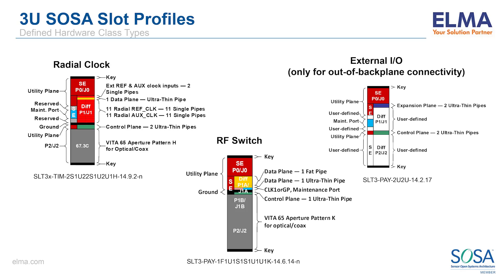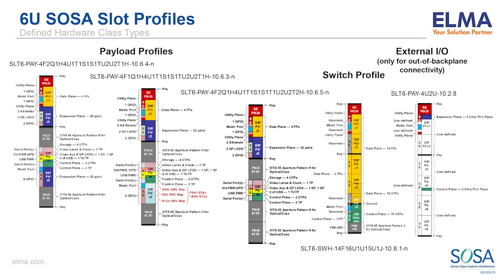SOSA restricts how these pins can be used, explicitly prohibiting them from being routed to other slots in the SOSA backplane, to prevent the profile from being misused as a vendor-specific profile. Turning to 6U, we find a more constrained set of profiles, with three payload profiles containing different mixes of apertures, expansion lanes, and mezzanine map pins, a single switch profile, and an external I/O profile similar to 3U.